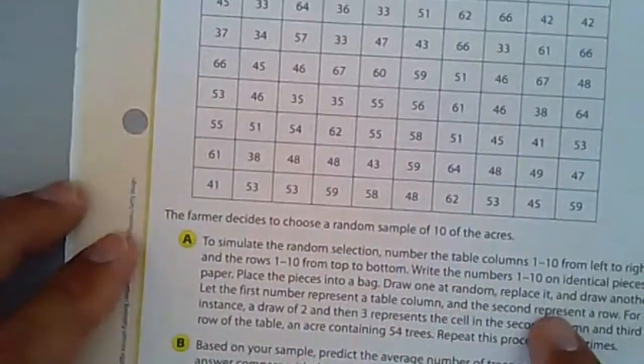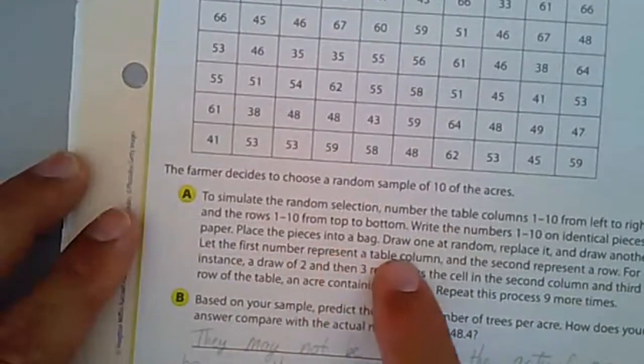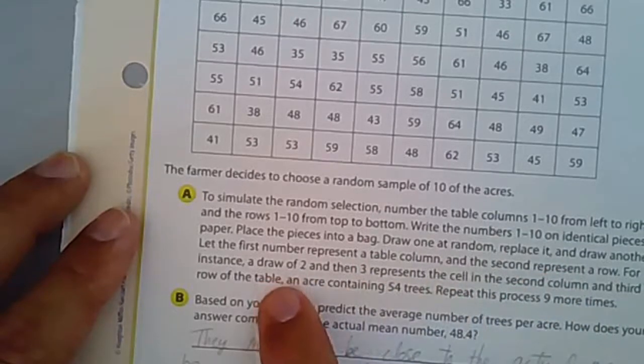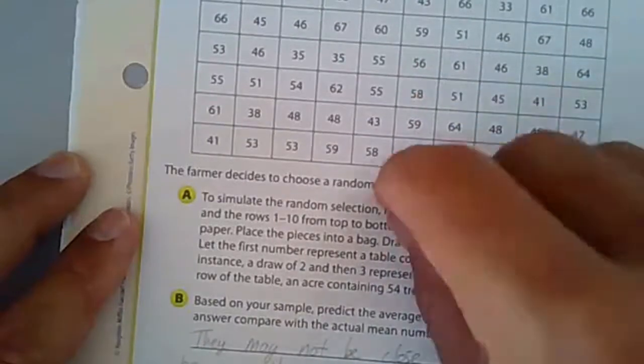Draw one at random, replace it, and place the pieces into a bag. Draw one at random and replace it and draw another. So on the paper you have 1 through 10 put in and so on.